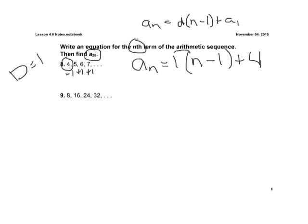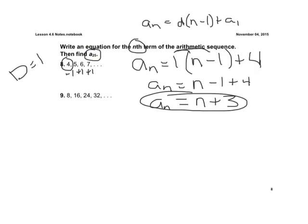Let's distribute this 1 through. Okay, so distribute. We have a sub n now is equal to 1 times n is n, minus 1 times 1 is 1, plus 4. Combine like terms. We're going to get in the end, a sub n is equal to n, negative 1 plus a positive 4 is a positive 3. This is our general equation for that arithmetic sequence. a sub n equals n plus 3.